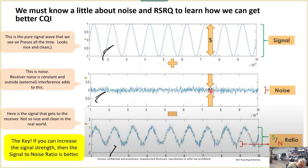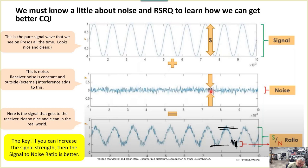When we talk about signal to noise ratio — which feeds into RSRQ and CQI — there's a ratio we need to discover. Very simply: if we take the height and trough of the signal wave and do a ratio with the noise, we look at how big the squiggly noise lines are relative to the high and low of the signal. If the peak to trough is 10 and the noise is about 2, then our signal to noise ratio is 10 over 2.